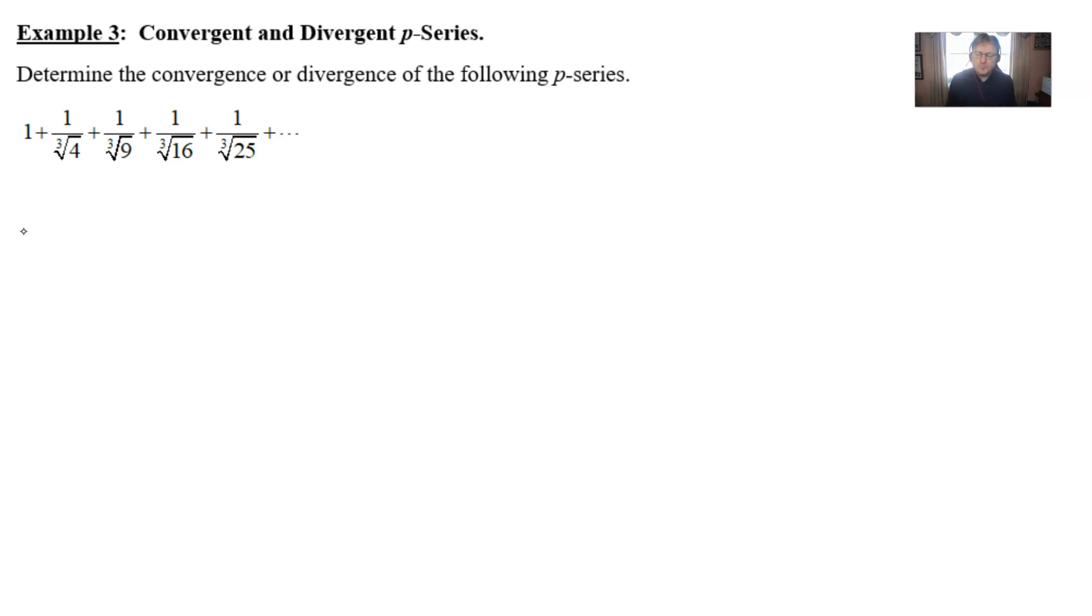Sometimes you might have a series that's not expressed in a very explicit summation form. Maybe they're going to list out the first few terms, as you see here. If that happens, you just have to take a deep breath and decide that you can very likely write this as a summation. And then once you do, you'll be able to better tell if it's a p-series or not.